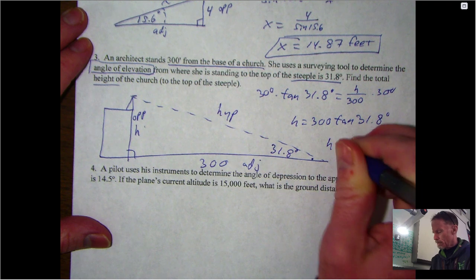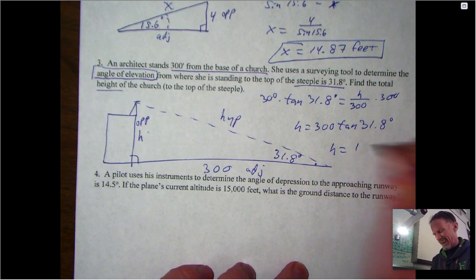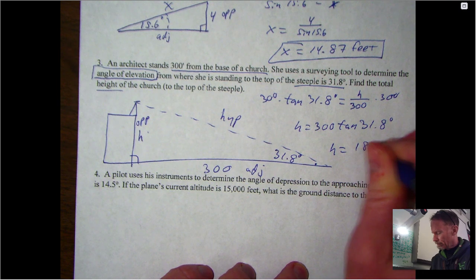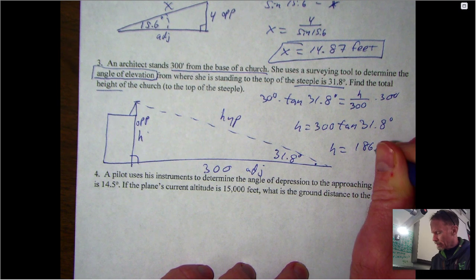And if you do that you should get about 186 - it's like 186.01 - and we should be going up to at least two decimal points.